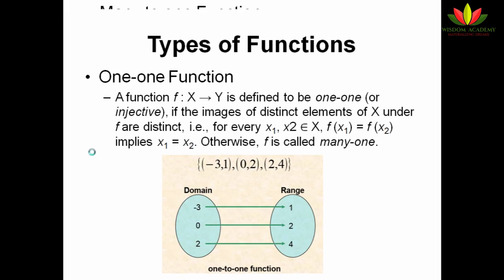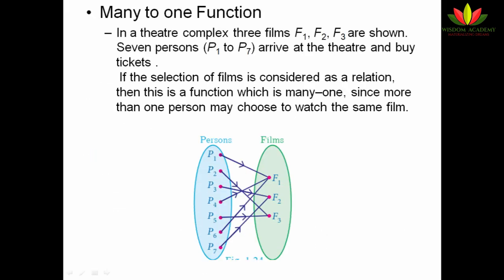Next, we are going to see many-to-one function. In this, each co-domain element can have multiple inputs. We can take an example of films at a multiplex — three films may be running but seven people are choosing among those three. So two or three people may choose a single film. That is many-to-one. The function which is not one-to-one will obviously be a many-to-one function.